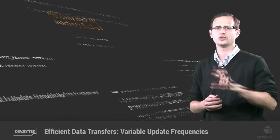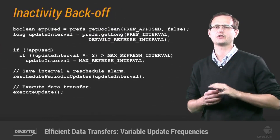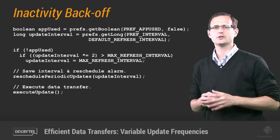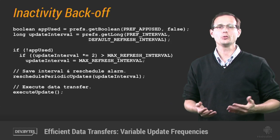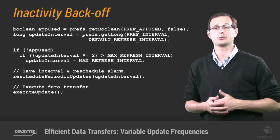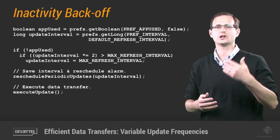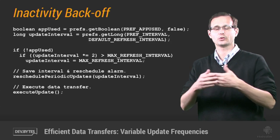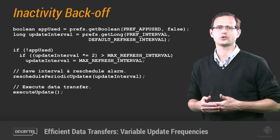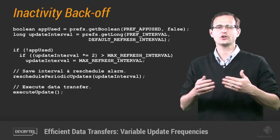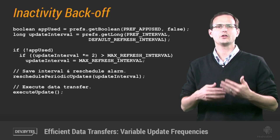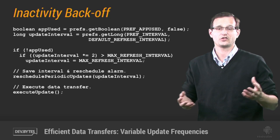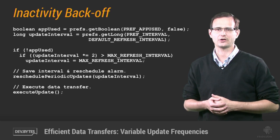You can mitigate this by reducing the background update frequency based on the recency of app usage. In this snippet, we check to see if the app has been open since the last time we performed a refresh. If not, we double the period between refreshes. Each time the app is opened, we reset that counter. As a result, your app has fresher data for regular users, while those who open the app only once a day or once a week are saved the resulting battery drain.